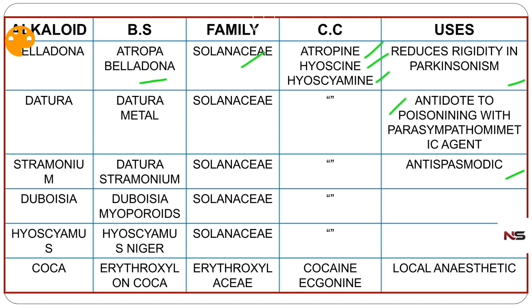The next alkaloid is datura. Datura is also coming under the family Solanaceae. Its biological source is Datura metel. It also has the same chemical constituents — atropine, hyoscine, hyoscyamine — and therefore the same uses: reducing rigidity in Parkinsonism, antispasmodic, and antidote for parasympathomimetic poisoning.